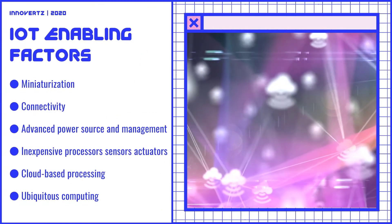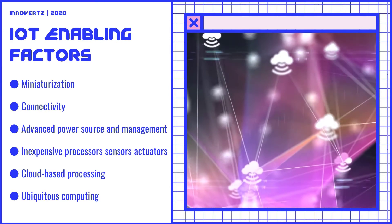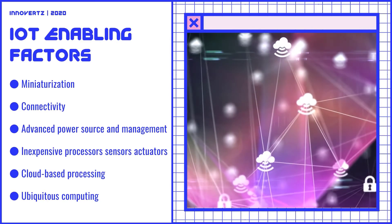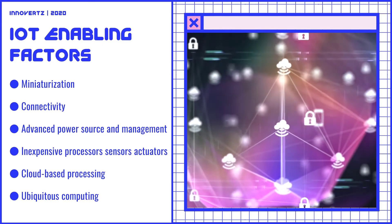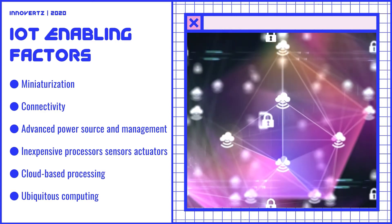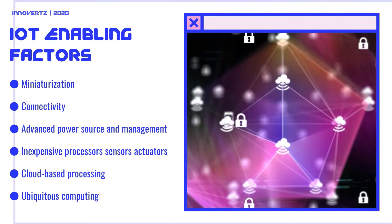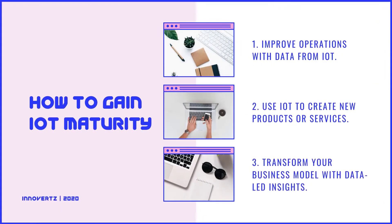IoT is enabled by the following factors. There are three key points: improve operations with data from IoT; use IoT to create new products or services; and transform your business model with data-led insights.